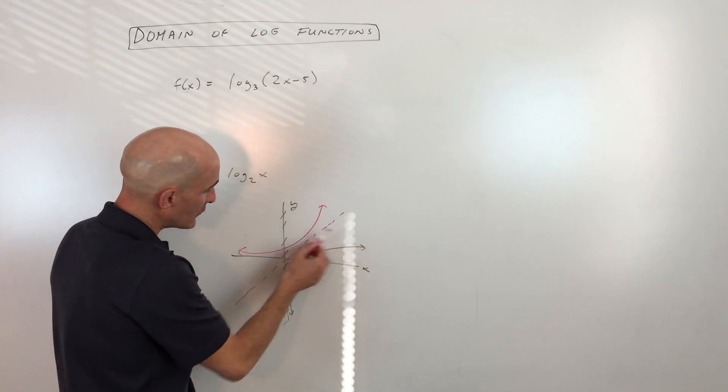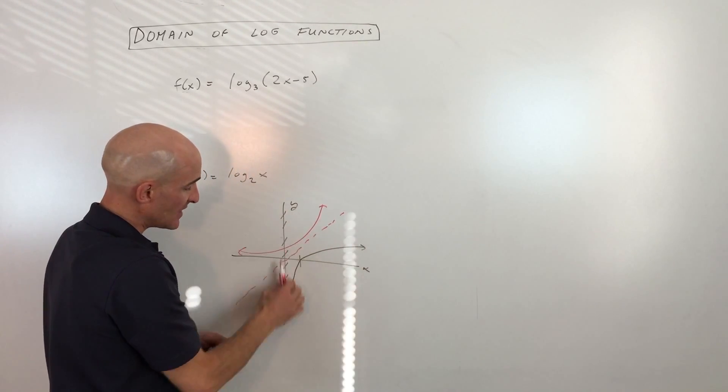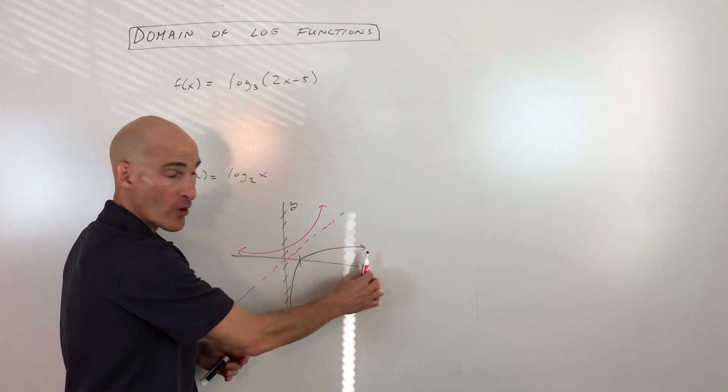But when you look at the log graph, you can see that it's always greater than zero. You can see it never touches the y-axis, it's always to the right here.